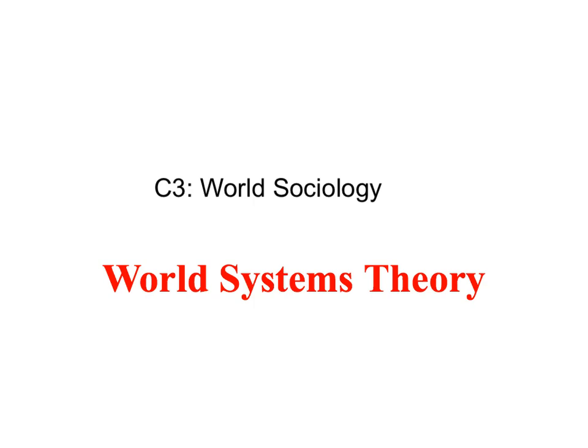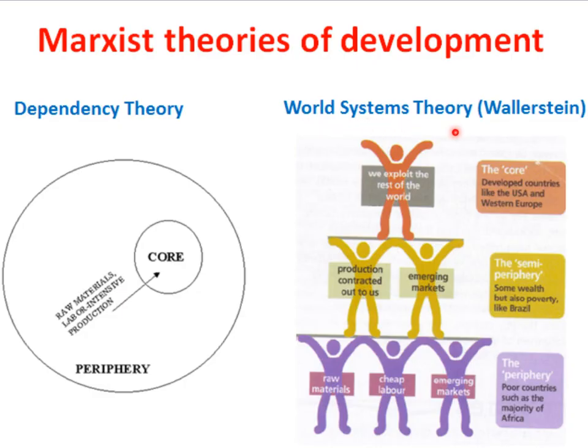Welcome to this SeeFree World Sociology screencast on World Systems Theory. World Systems Theory is a perspective associated with the work of Immanuel Wallerstein, and the easiest way of understanding this perspective is to see it as essentially a modified version of Dependency Theory. Both of these perspectives share a basis in Marxism — a kind of Marxist critique of global capitalism.